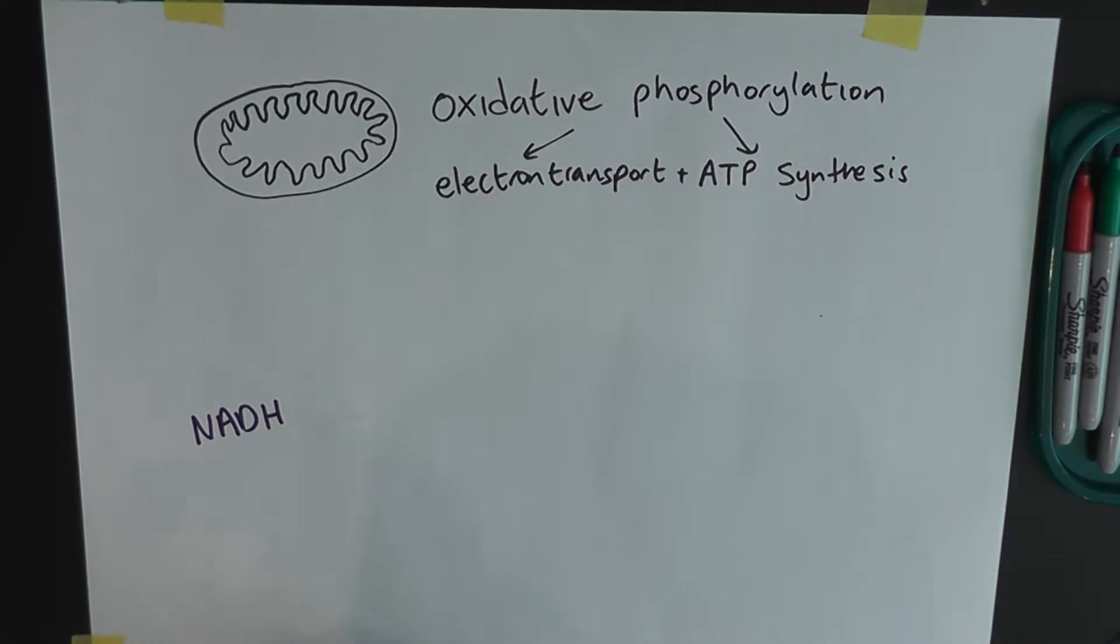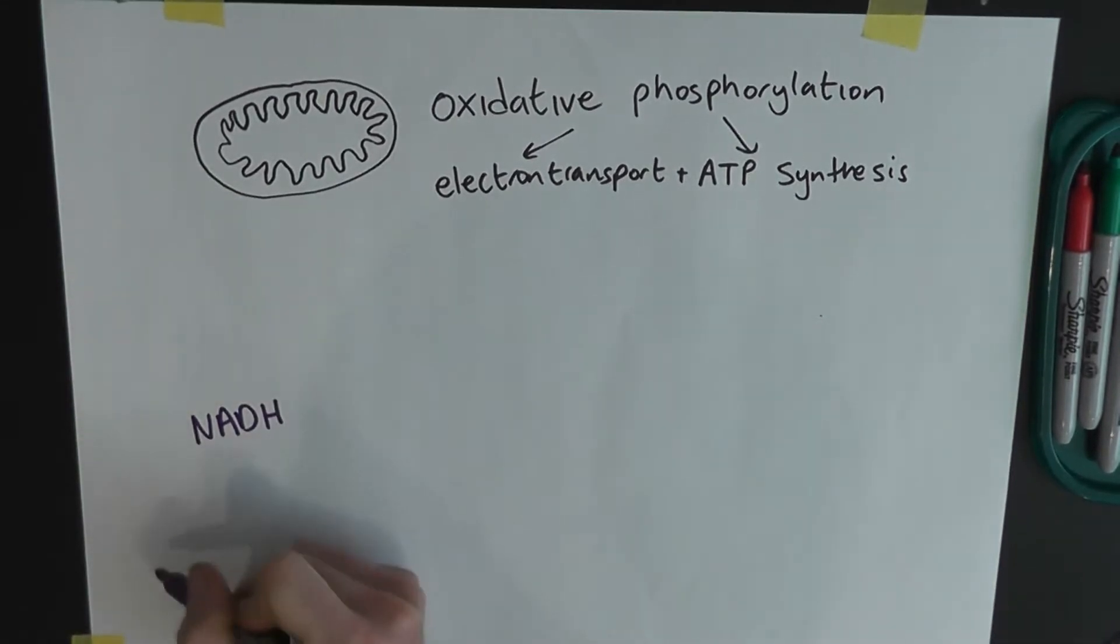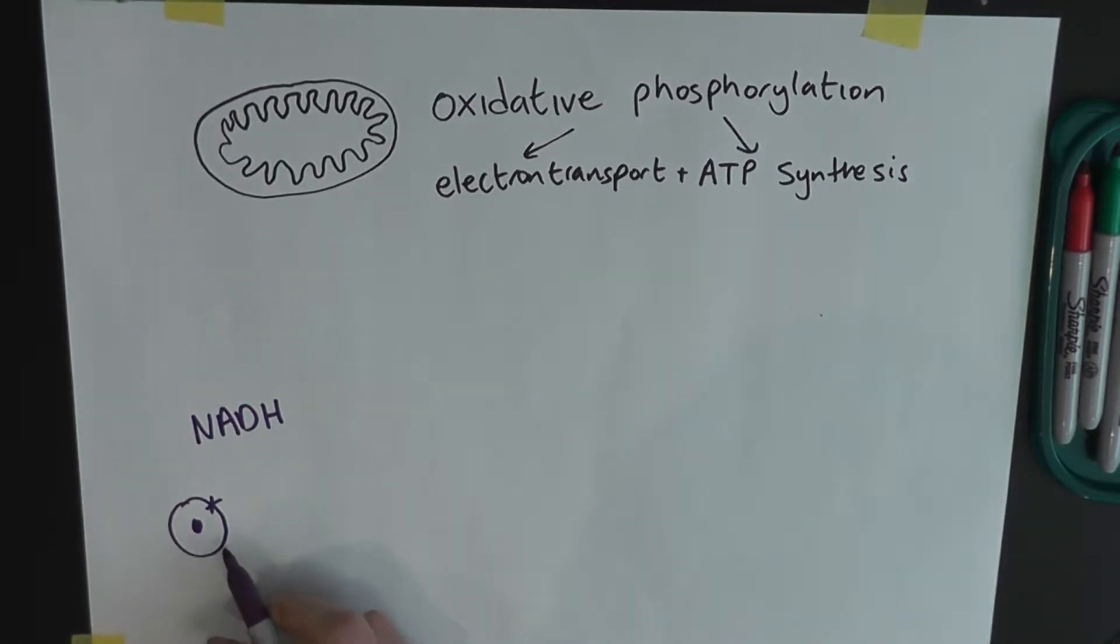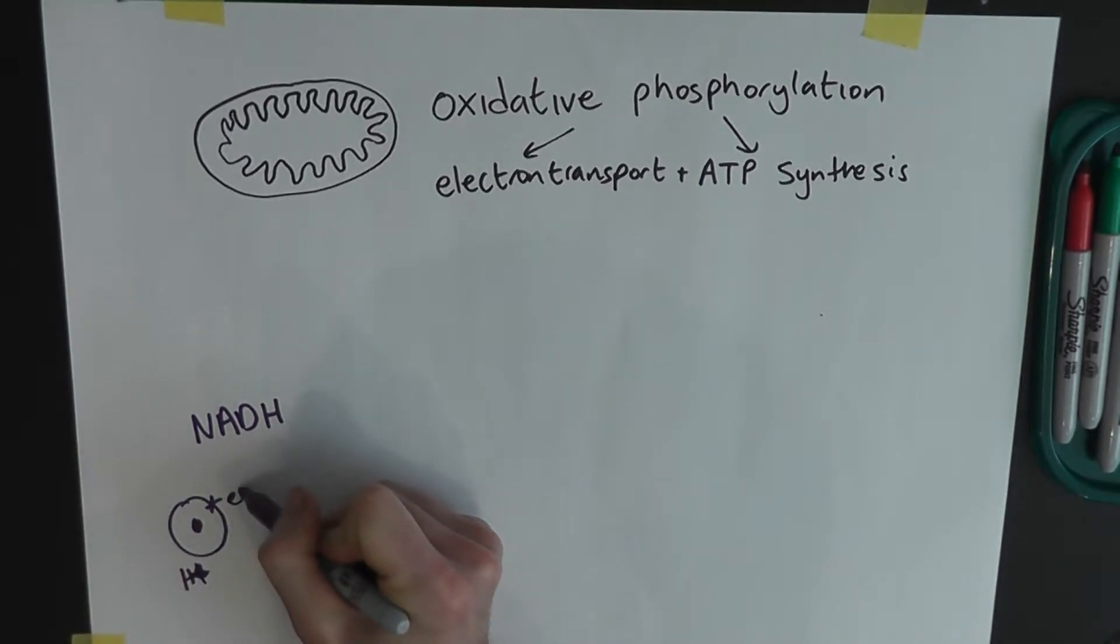And the reason it's important is because the H there, which in essence is just, we'll go back to like GCSE chemistry here, which is just a hydrogen, that consists of a proton, which we call H+, and an electron, which we call E-.